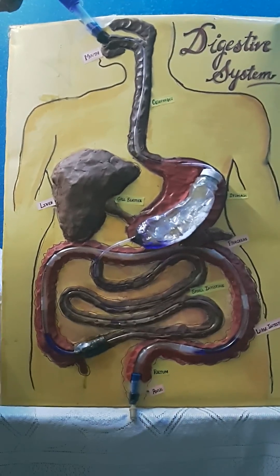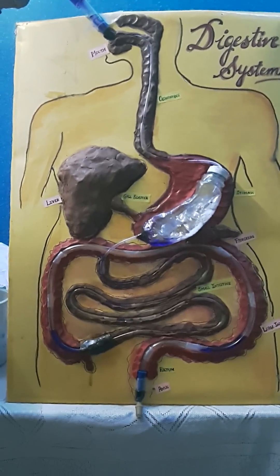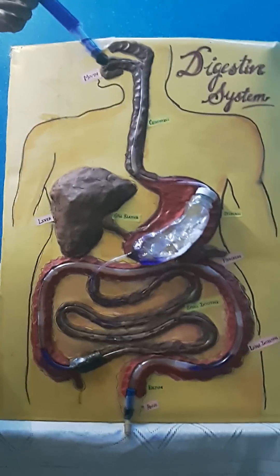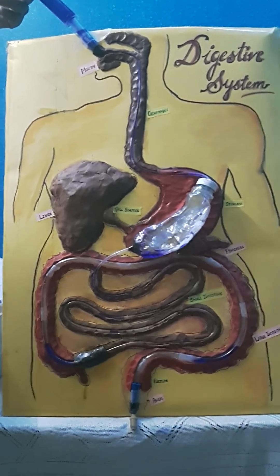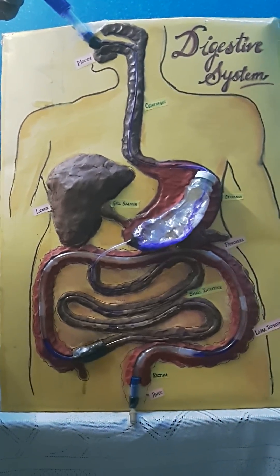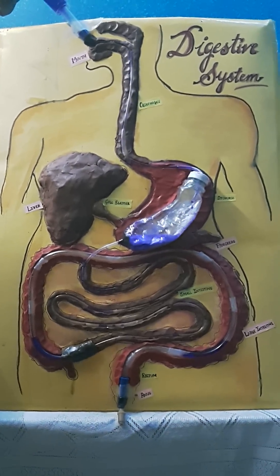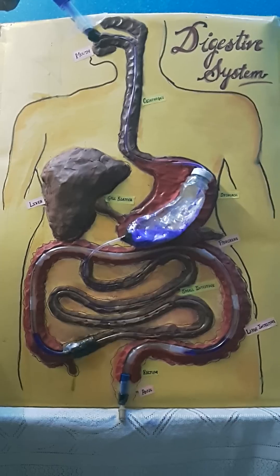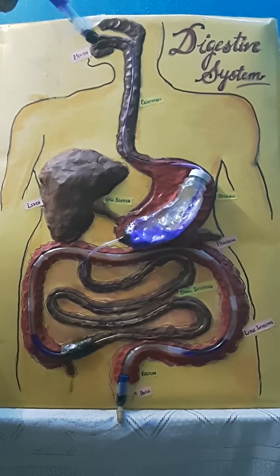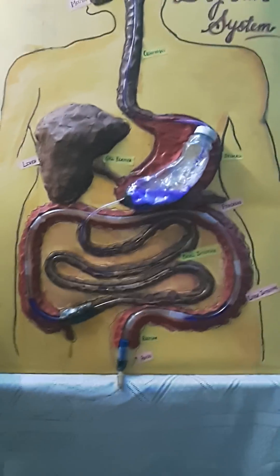From the mouth, the pipe travels through the esophagus, and as you can see, the water from its mouth goes through the esophagus and then enters the stomach.